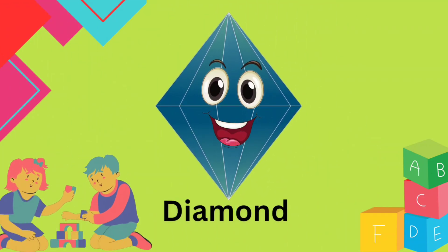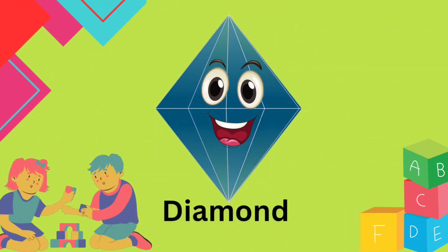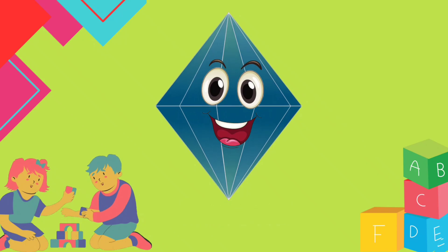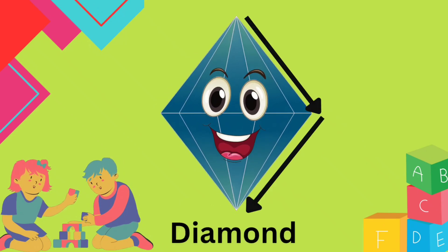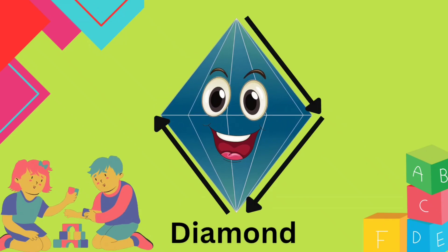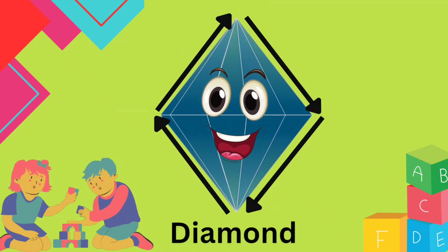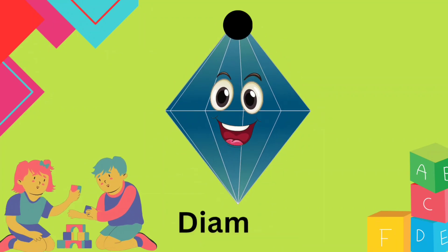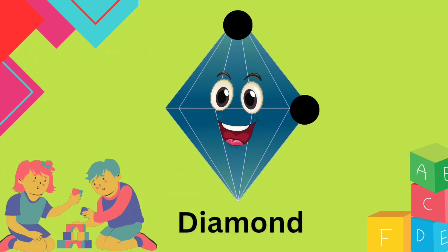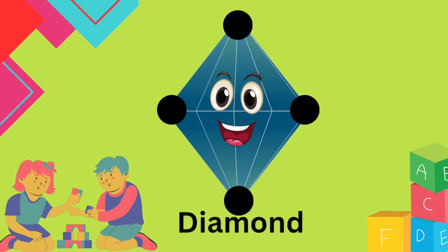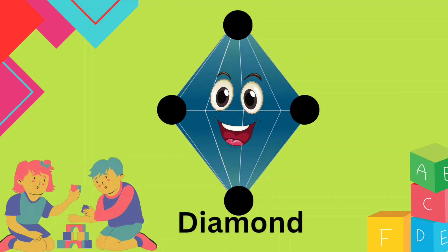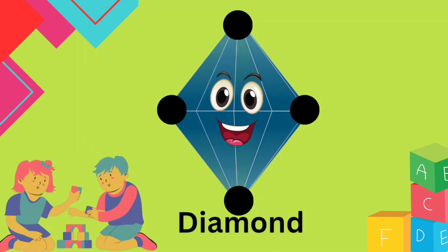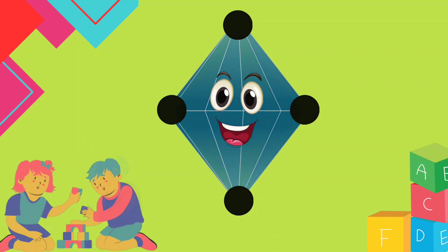Hi, kids. I am a diamond. I have 4 sides. 1, 2, 3, 4. And I have 4 corners. 1, 2, 3, 4. My 4 sides and 4 corners make me a diamond.